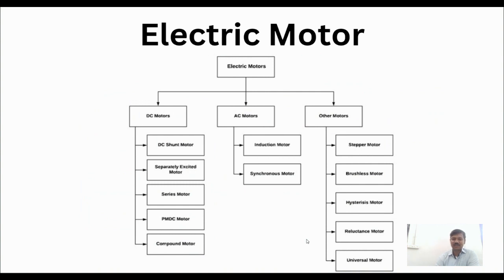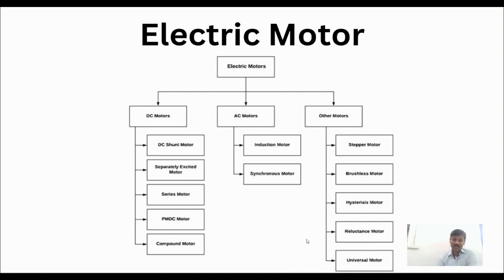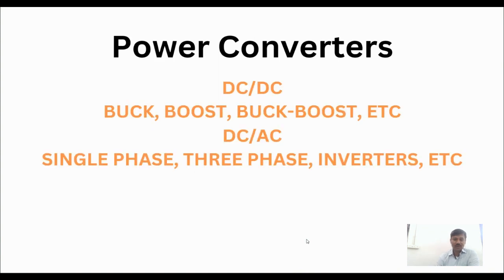The second major component is the electric motor. Electric motors can be DC or AC. DC motors include separately excited, series, PMDC, and compound motors. AC motors include induction motors and synchronous motors. Other motors include brushless motors, stepper motors, reluctance motors such as switched reluctance and variable reluctance, and universal motors. Nowadays, brushless motors are preferred, and large power rating EVs also use three-phase induction motors.